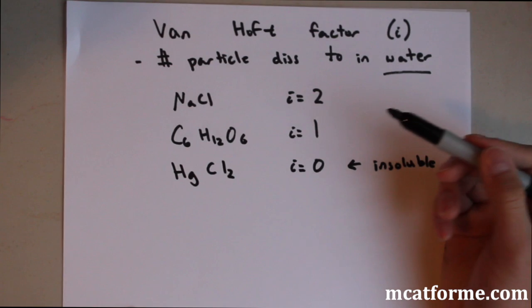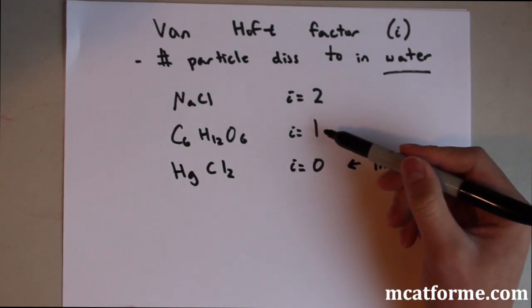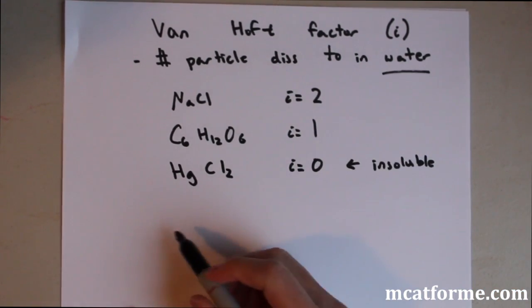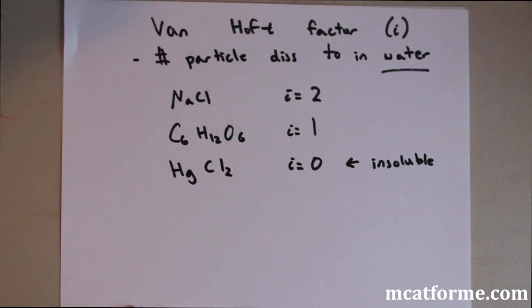And so we have to keep these two straight. i equals 1 versus i equals zero. i equals 1 simply means it dissolves, but it doesn't dissociate into smaller particles. i equals zero means that it strictly is insoluble.